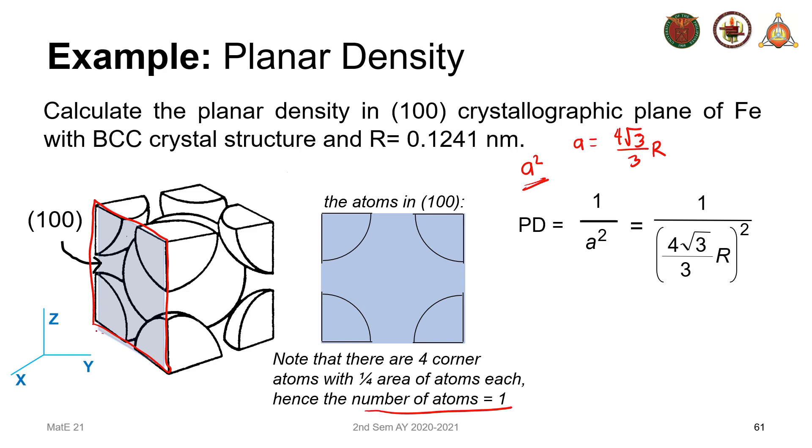This came from the relationship between the body diagonal and a. We know that 4r is equal to a square root of 3. The body diagonal is equal to 4 radius. So we have this relation: a squared will be 4 square root of 3r squared, or 4 square root of 3 over 3r squared. Plugging in our values, we'll get that the planar density is equal to 12.1 atoms per nanometer squared.